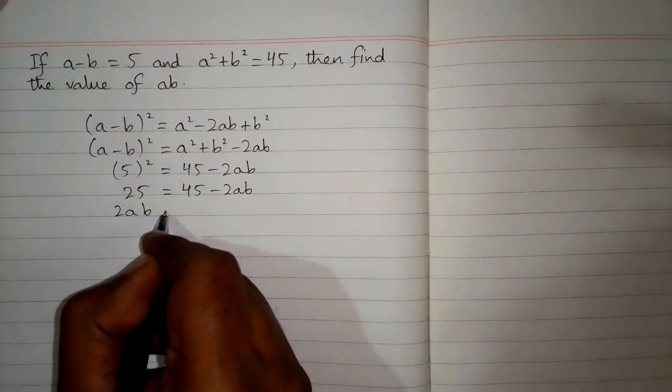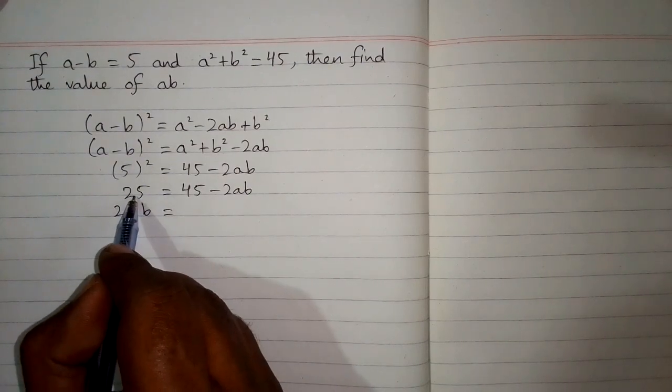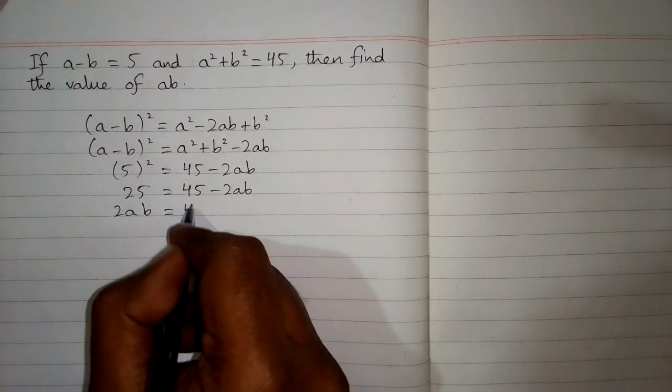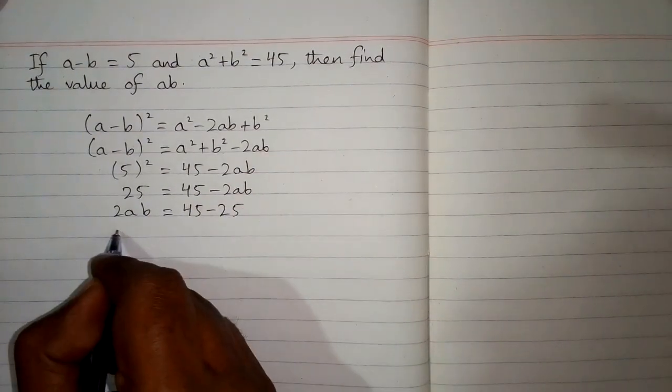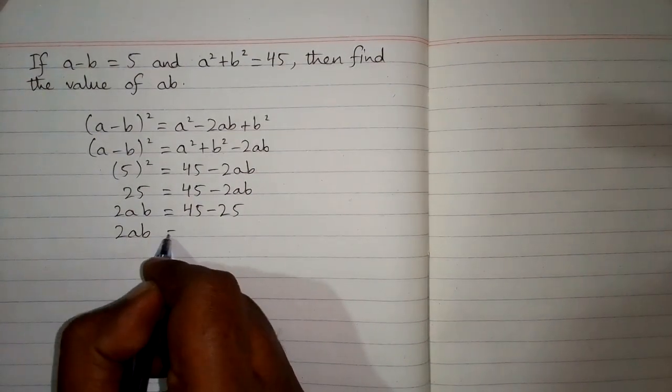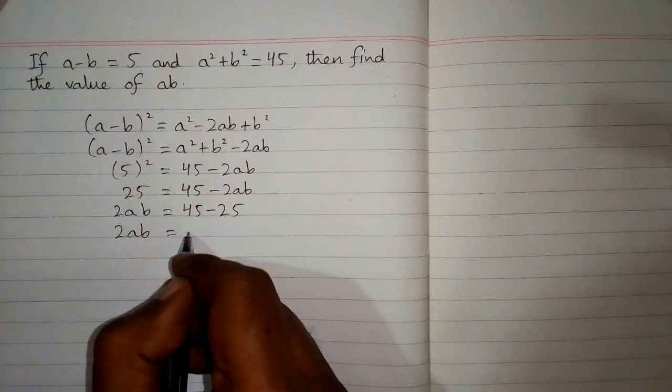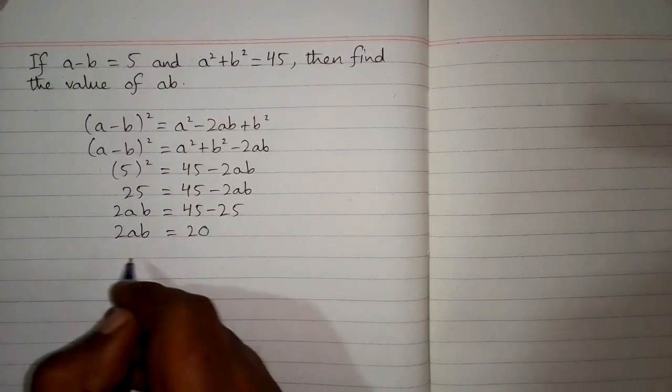This will become plus 2ab, and we can take this 25 on this side of equation. So we have 45 minus 25. Now 2ab is equal to 45 minus 25, which is equal to 20.